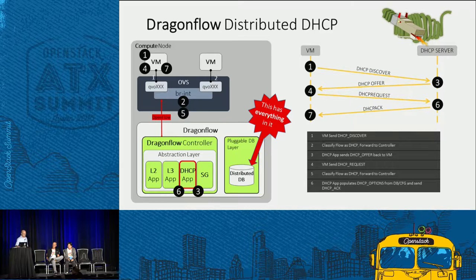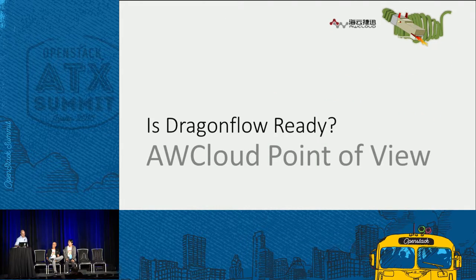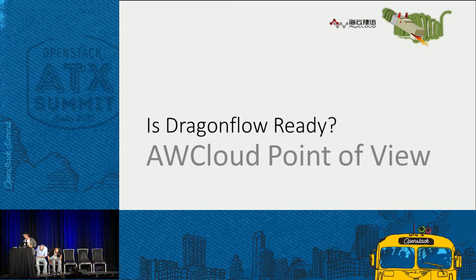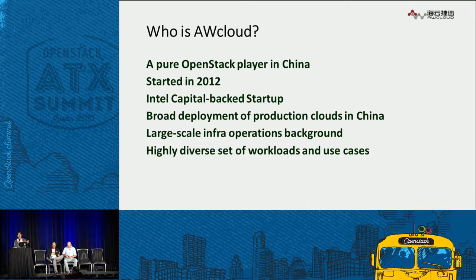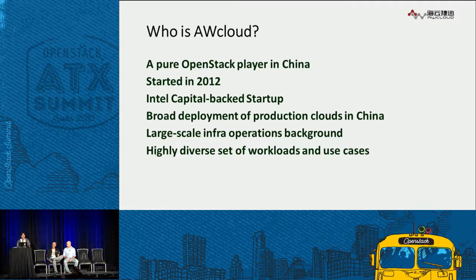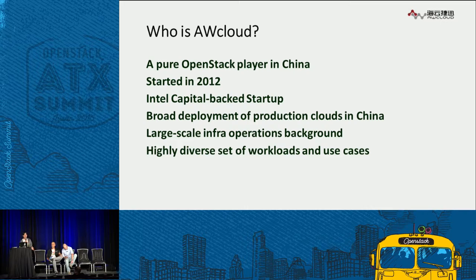I'll hand over now to Mali, who is going to show a user point of view on Dragonflow. Hello everyone, I'm Li Ma, and I'm working for AWS Cloud. AWS Cloud is a pure OpenStack player in China, and we help our enterprise customers to design, build, and operate OpenStack clouds from 2012. Currently, we've already built several large clouds in China, scaling from 500 to more than 2,000 physical nodes.